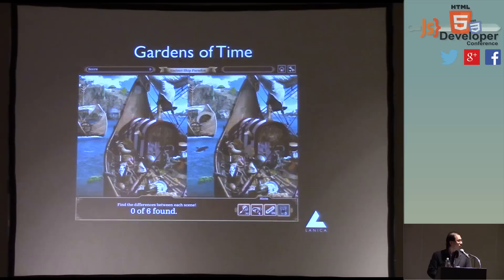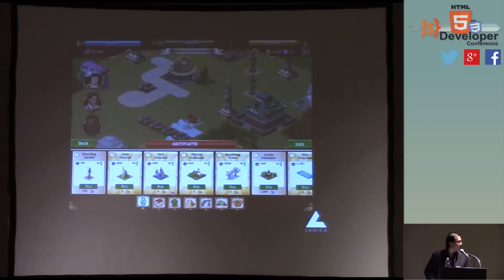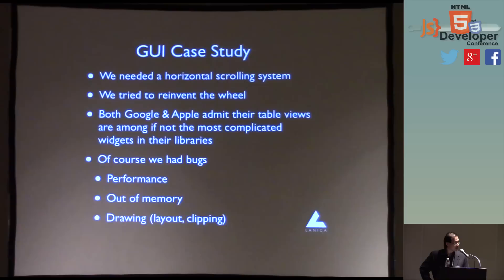Some context: we actually did a game with Disney — they wanted to bring Gardens of Time to Android. It's a hidden objects game that meets Farmville. A lot of this involved custom user interface widgets, and this picture doesn't show the bugs or performance issues. We reinvented the wheel and did it poorly. Google and Apple told us list views are the hardest widget in their libraries — and we didn't listen. We said, oh, we can do it. And well, we did it and it just kind of sucked.